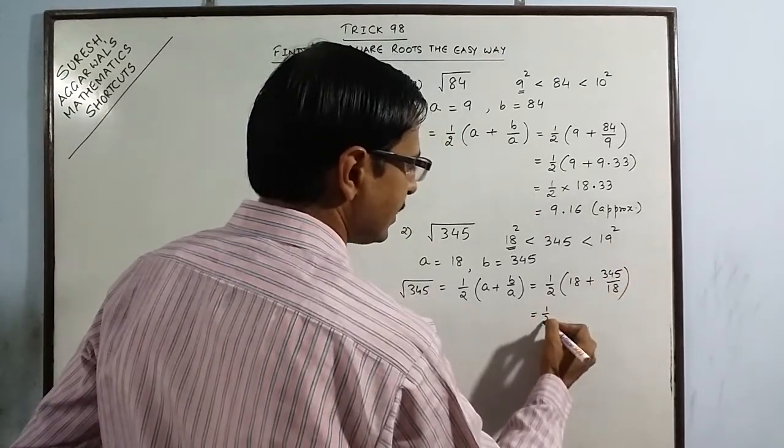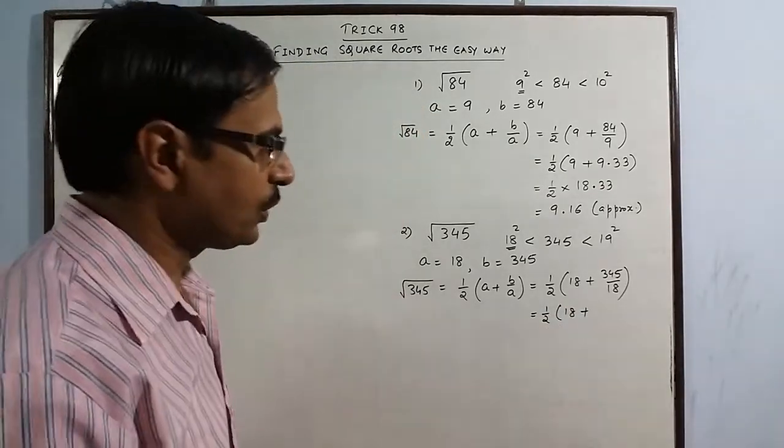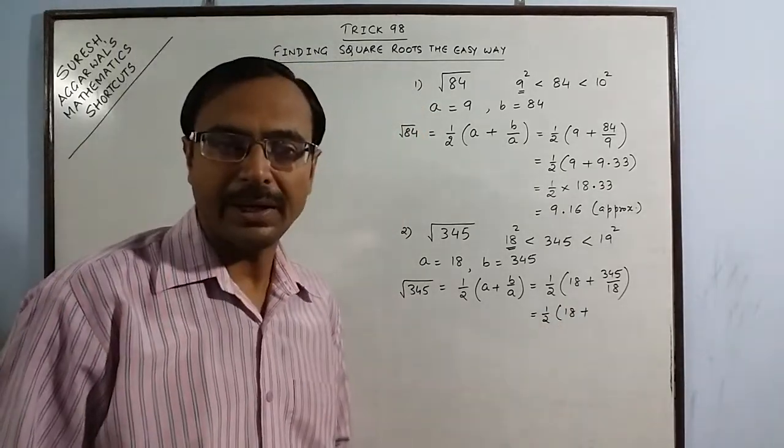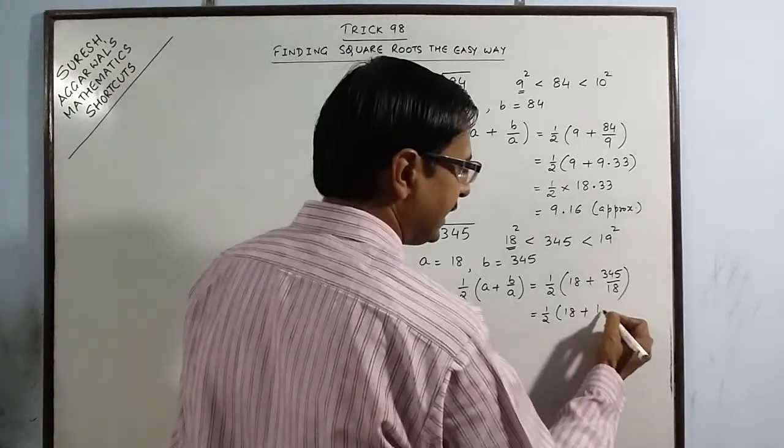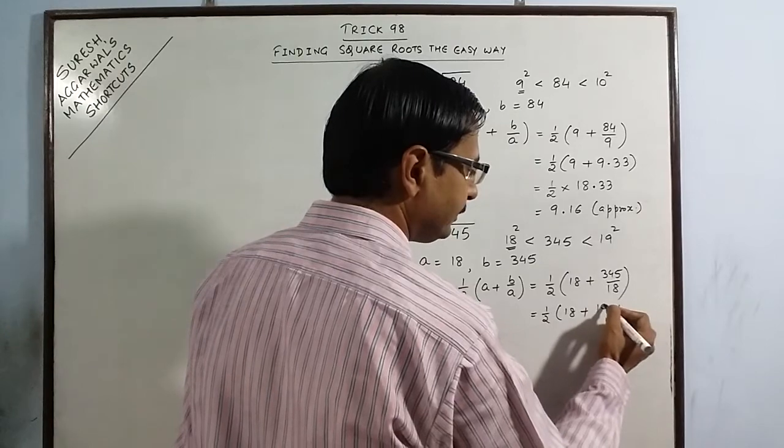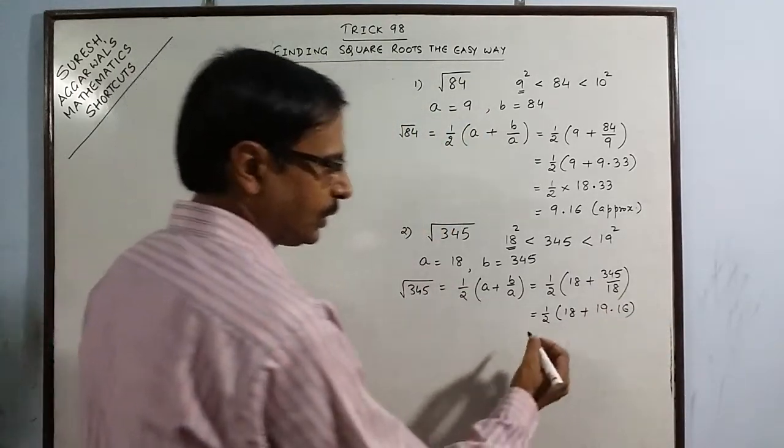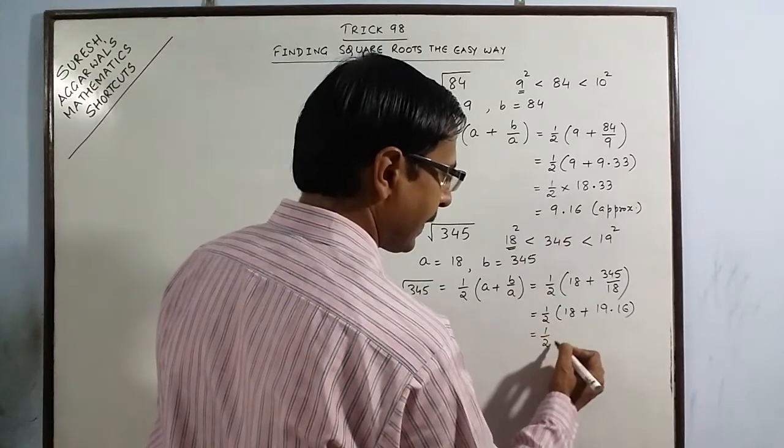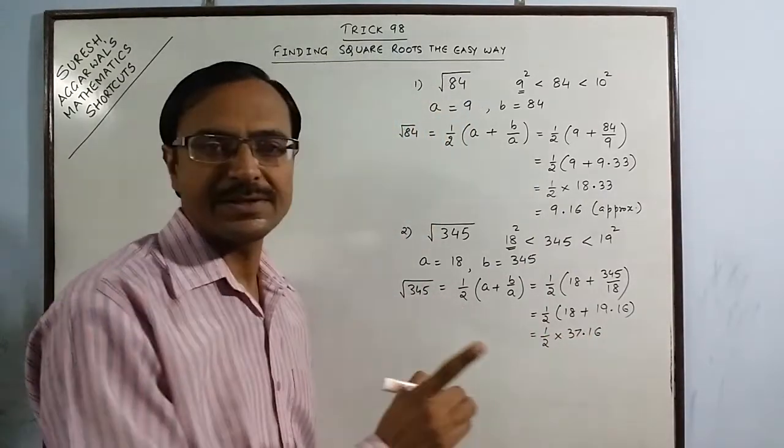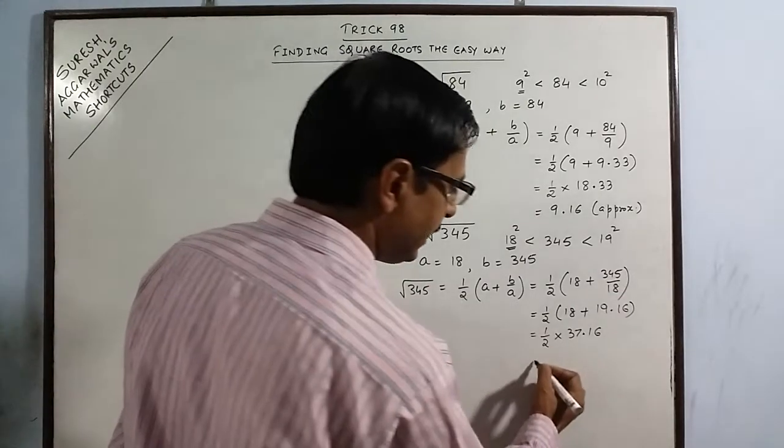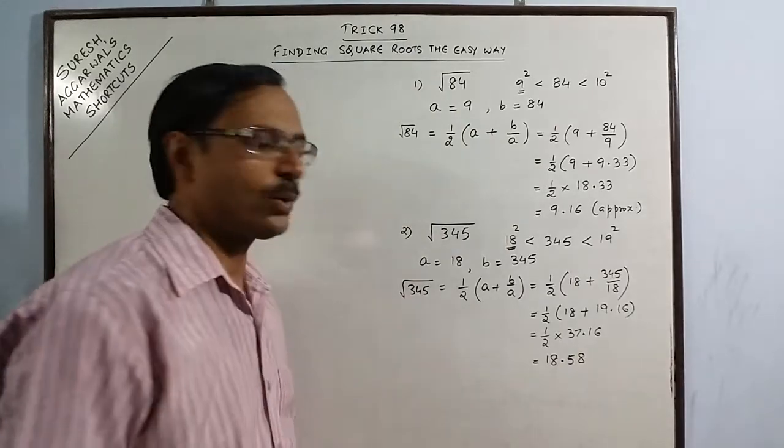Now this is one calculation which you need to do in rough work. You need to divide 345 by 18. I have already solved that for you, so that will be 19.16. So if you add them, this will be 37.16 and if you divide that by 2, this will be 18.58, which will be the required square root of 345.